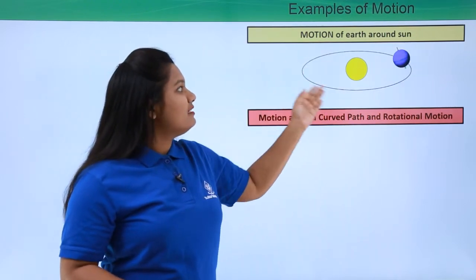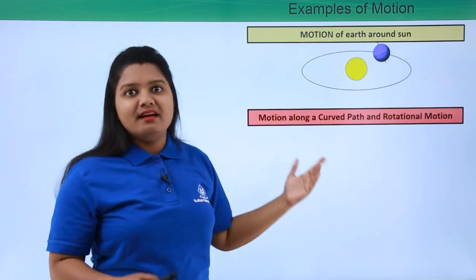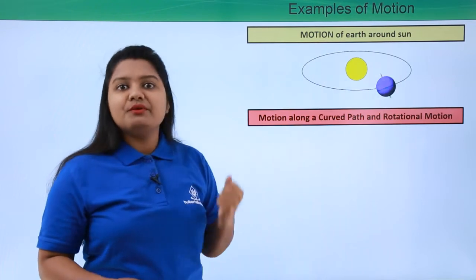So this is a kind of motion that earth makes which is not a simple one, but it is a combination of two kinds of motion. Now let me give you another example.